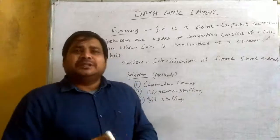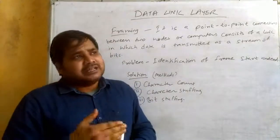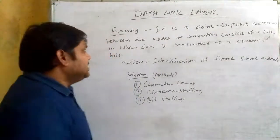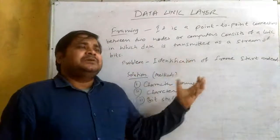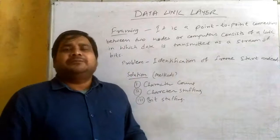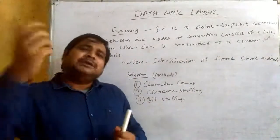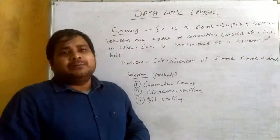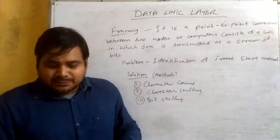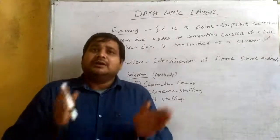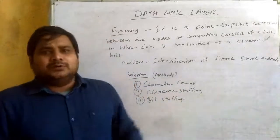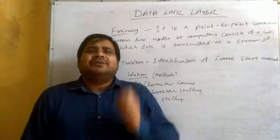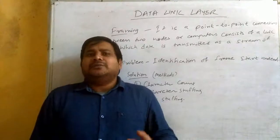Basically, frames have two elements. One frame is fixed — the size is fixed. The other frame is variable length. When we talk about fixed size frames, each frame has the same length and size, equal to all frames. When we talk about variable length frames, the length of each frame will be different, so here is a difficulty.